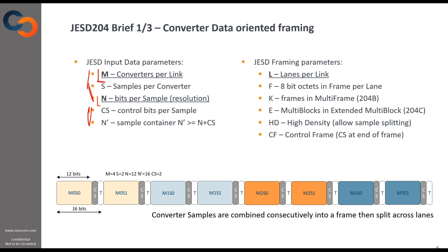Those converter samples can be accompanied by control bits. These control bits are additional sideband information pertaining to the samples, like overrange, underrange, or sample valid — whatever you actually want. These are not defined by the standard.